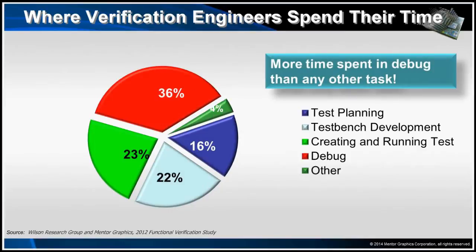Let's now look at where verification engineers spend their time. Here we are looking at test planning, test bench development, creating and running tests, debug, and other tasks. Note that verification engineers spend most of their time, which is 36%, in debug. Here we are talking about debugging both the design and the test bench. Anything you can do to optimize this process is obviously a big win for the organization. And this is where assertions can help us.